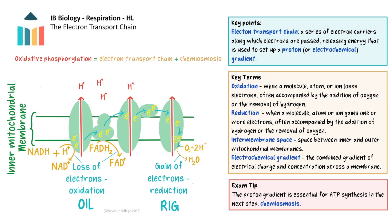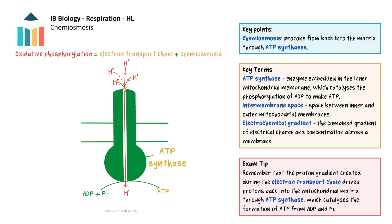The high energy electrons are passed from electron carrier to electron carrier along the chain, releasing energy as they go. This energy is used to pump protons — hydrogen ions — from the matrix to the intermembrane space, thereby building up the concentration of protons in the intermembrane space and creating a proton gradient. Due to this proton or electrochemical gradient, protons flow back into the matrix through special transmembrane proteins called ATP synthases. As the protons move through them, ATP synthases catalyse the production of one ATP molecule from one ADP and one inorganic phosphate. This movement of protons down the electrochemical gradient is called chemiosmosis.